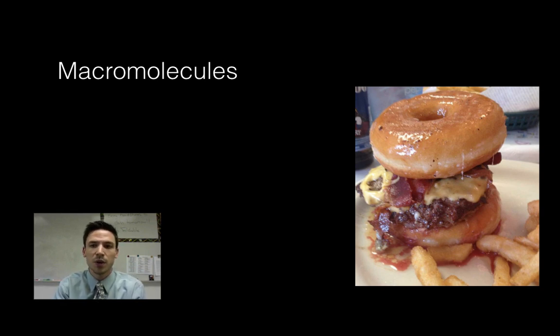So we're going to take a look at this donut burger. You can see that the bun or the donut is going to be my source of carbohydrates which is one type of macromolecule. The meat and the bacon here is going to be a source of protein, another type of macromolecule, and the grease dripping off and the fat inside the bacon is another type of macromolecule called lipids.